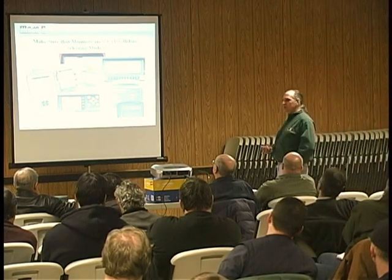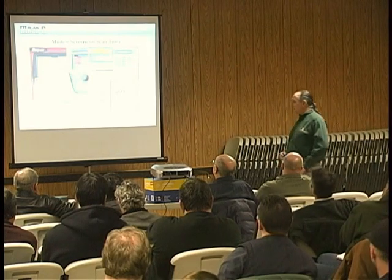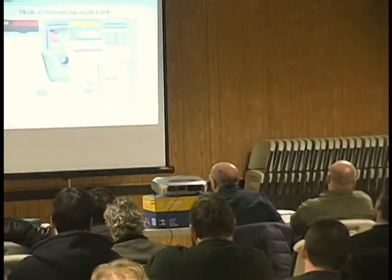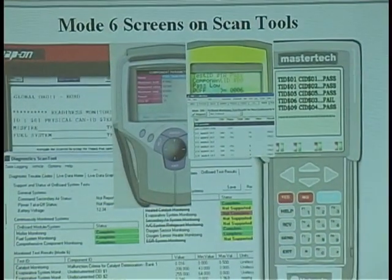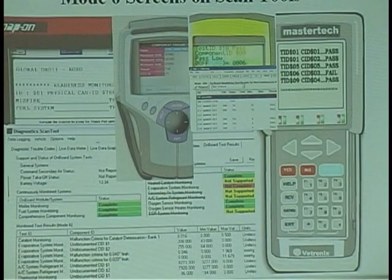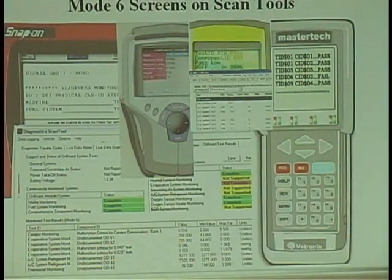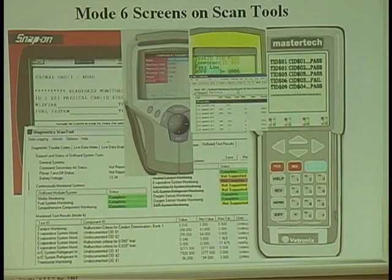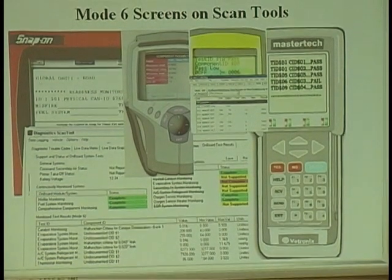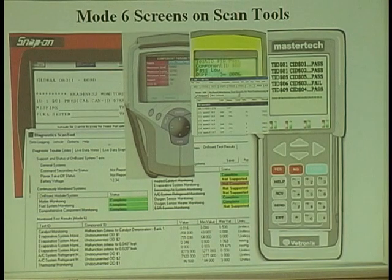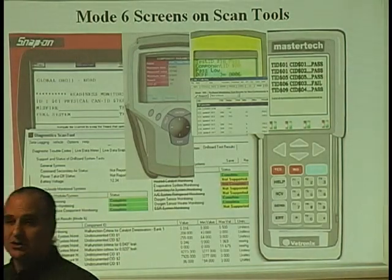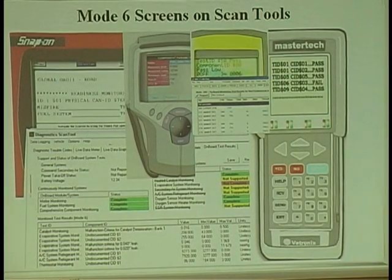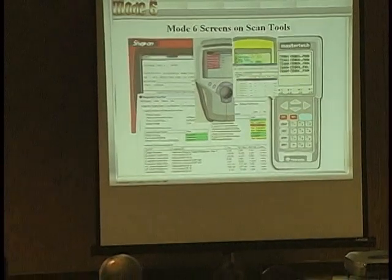I'm going to give you some case studies and some pitfalls. Some scan tools show only hexadecimal data. Meaning you need to go to www.nastf.org and go to all the manufacturer websites and take the hexadecimal TID — test ID — SID — component ID — MID monitor ID — and break that down into whether it's an oxygen sensor, a high or low test, or whatever they're looking for.